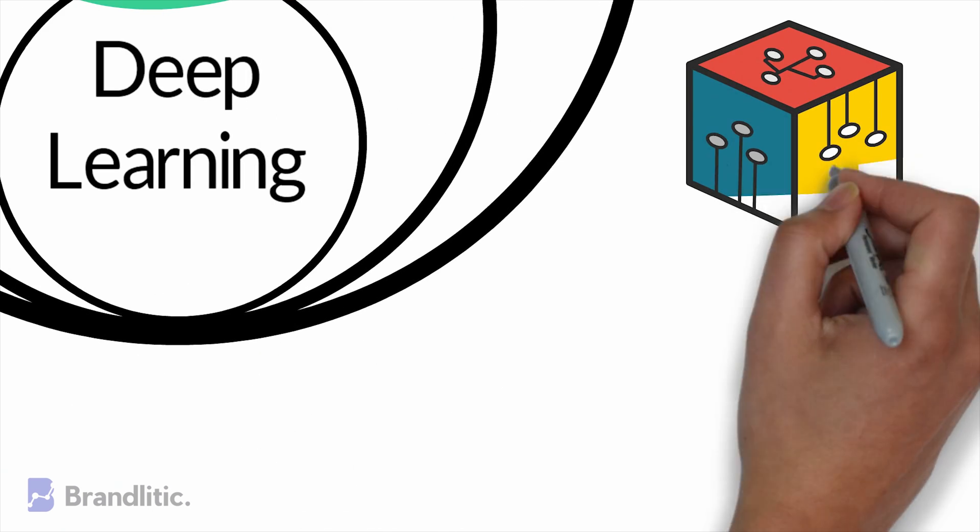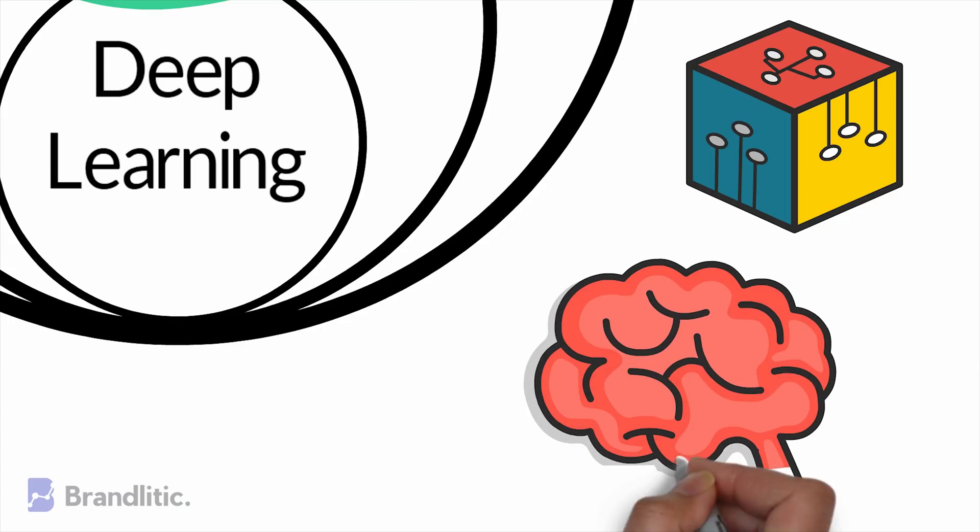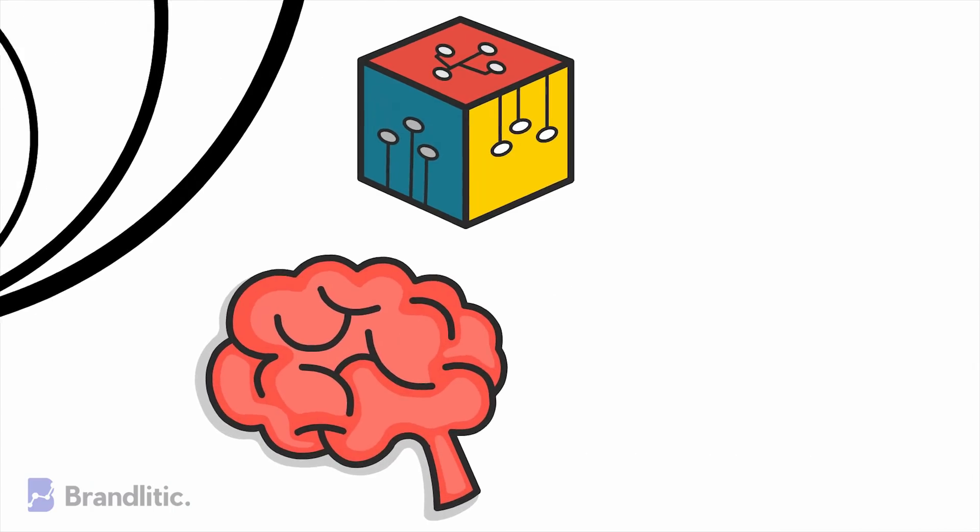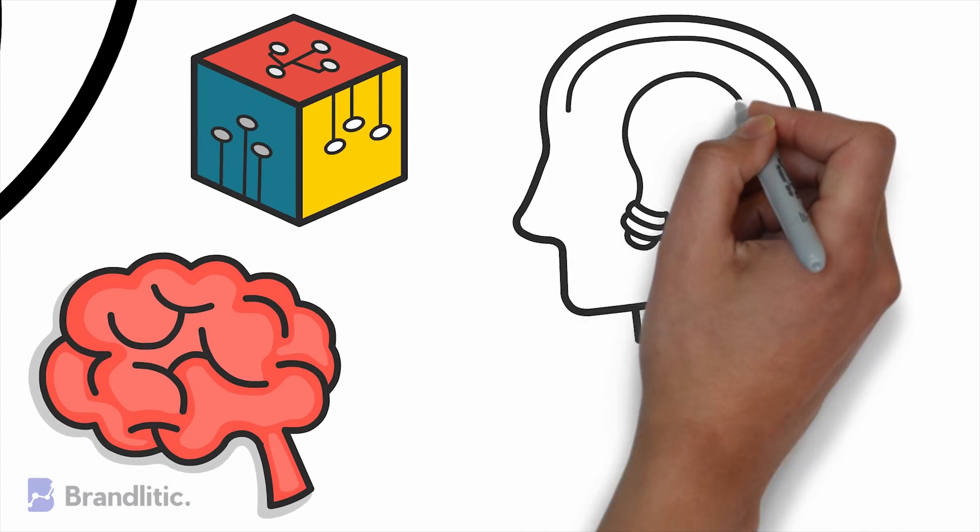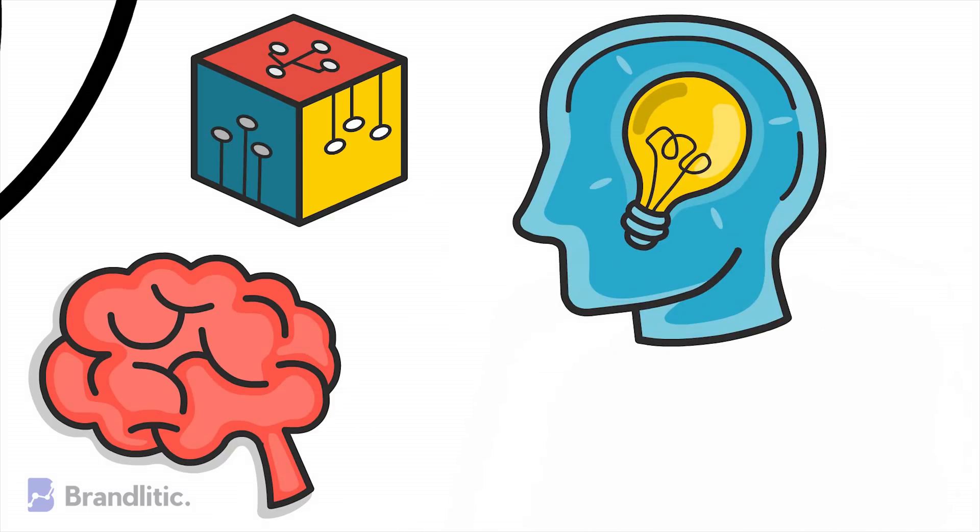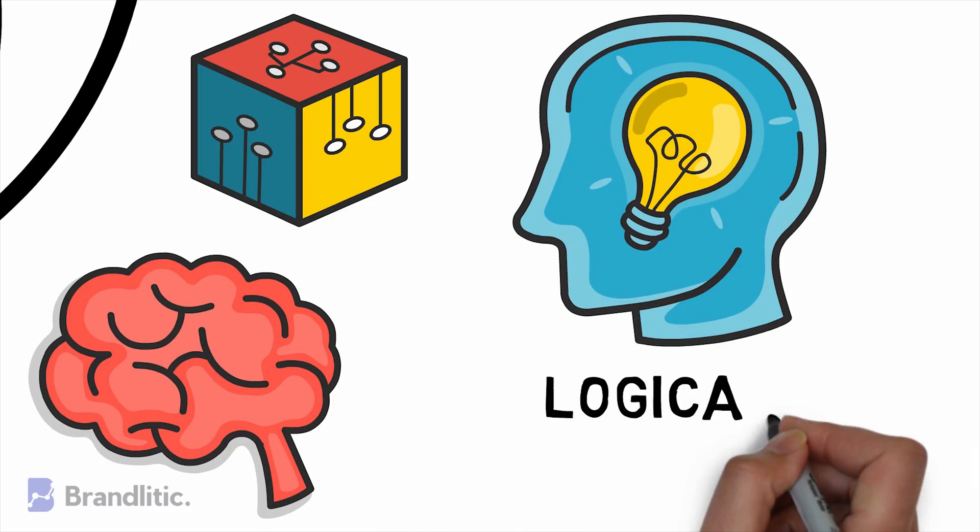And now, deep learning is just a type of machine learning inspired by the structure of a human brain. That is, the algorithms in deep learning attempt to draw similar conclusions as a human would by constantly analyzing data with a given logical structure.